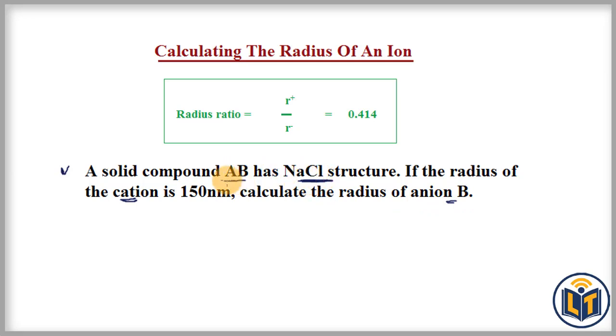From the type of structure, we determine the radius ratio. What radius ratio do we need to apply to calculate the radius of anions? If we look at the table, you can see this is the table given here.